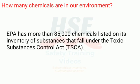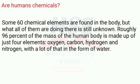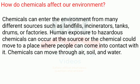Are humans made of chemicals? Some 60 chemical elements are found in the human body, but what all of them are doing there is still unknown. Roughly 96 percent of the mass of the human body is made up of just four elements: oxygen, carbon, hydrogen, and nitrogen — with a lot of that in the form of water.